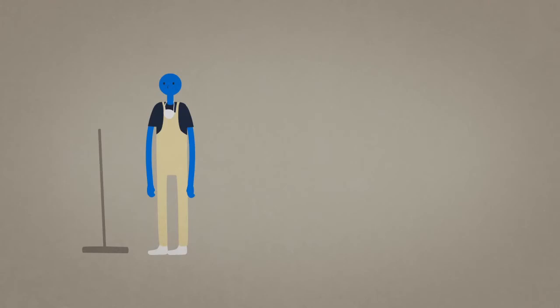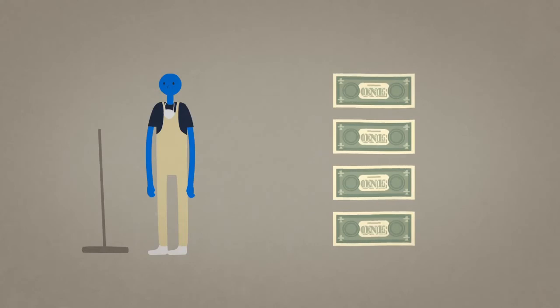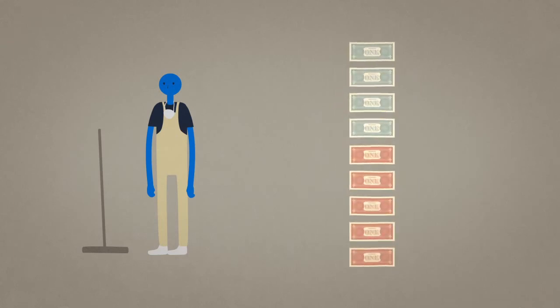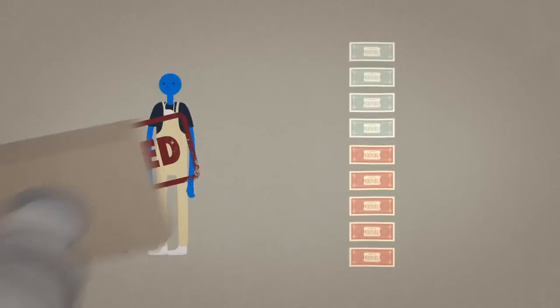But the new law is bad news for Simon. Simon's labour generates only four dollars an hour for Edgar. The nine dollar minimum wage is five dollars more than that. Edgar would be losing five dollars an hour by keeping Simon on at the new legal minimum. So Simon doesn't get a raise. Instead, he loses his job.